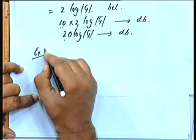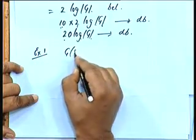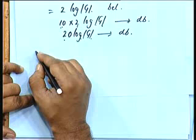Let us take one simple example, G(s) equal to 10 by s plus 10. What will be the frequency response for this?